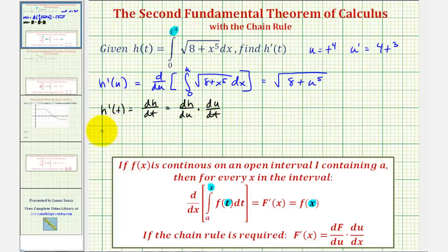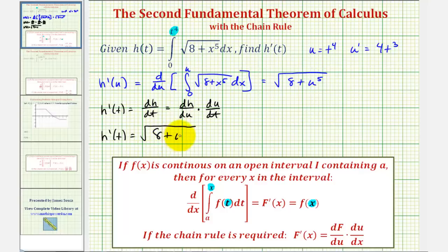Which means h prime of t is equal to dh/du — which we have here — the square root of eight plus u to the fifth, times du/dt. And u prime, or du/dt, is four t to the third.